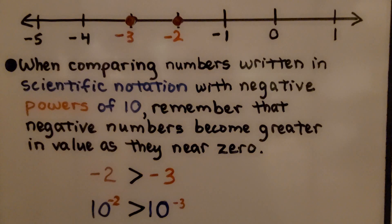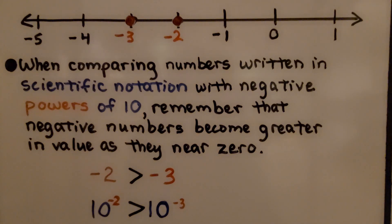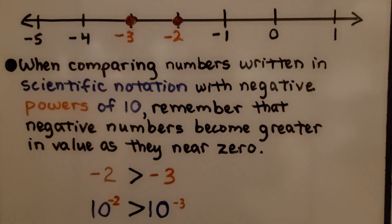When comparing numbers written in scientific notation with negative powers of 10, remember that negative numbers become greater in value as they near zero. Negative 2 is greater than negative 3. This means 10 raised to the negative second power is greater than 10 raised to the negative third power.